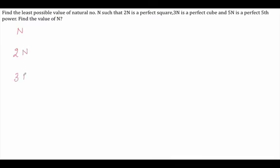Basically, n is getting multiplied by 2, 3, and 5. So let us assume that n is equal to 2 raised to power a, into 3 raised to power b, into 5 raised to power c. The reason we take only powers of 2, 3, and 5 is because n is getting multiplied by 2, 3, and 5 — so only those powers will be affected.